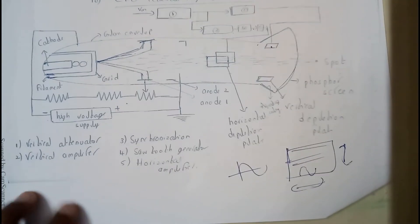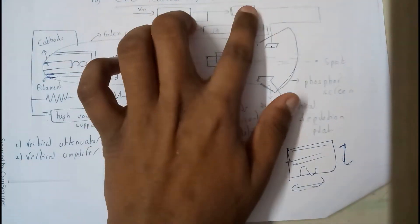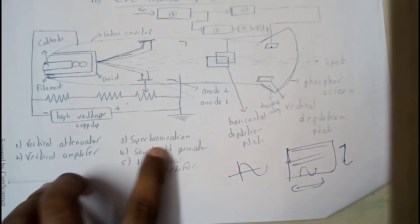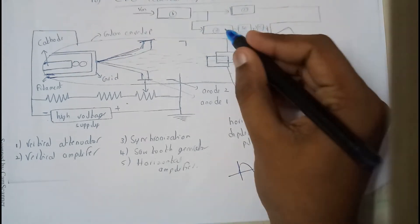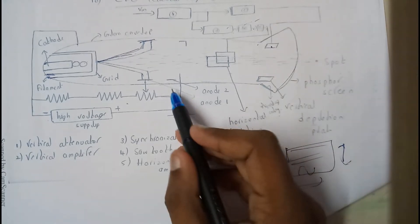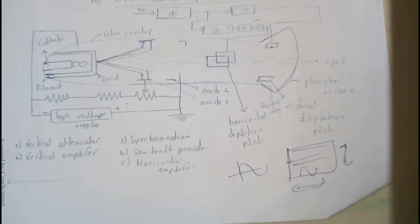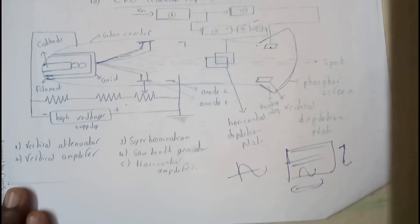The vertical attenuator and vertical amplifier are used for vertical movement. For the horizontal section, there is the synchronizer, sawtooth generator, and horizontal amplifier — those are the three things. This is anode one and this is anode two. I hope everyone now has a clear idea on this.